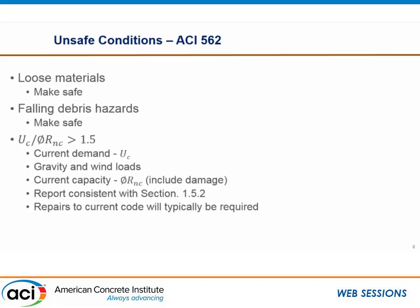Let's talk about ACI 562 on simple things — unsafe conditions. We spent a lot of time creating the definition for an unsafe structural condition. Based upon reliability principles, we're taking demand — limited to gravity and wind loads — and looking at current capacity and comparing them into this 1.5 number. The 1.5 number was actually derived from a reliability analysis using that IEBC definition. There's a paper published on this in Concrete International. So we're answering questions that the IEBC does not provide an answer to.